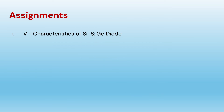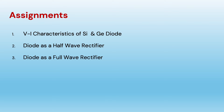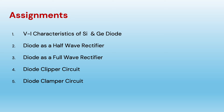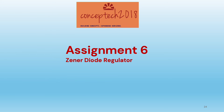The assignments in the lab include the VI characteristics of silicon and germanium diode, then working of diode as half wave and full wave rectifier, diode used as clipper and clamper, and lastly zener diode working as voltage regulator.